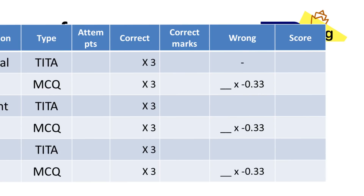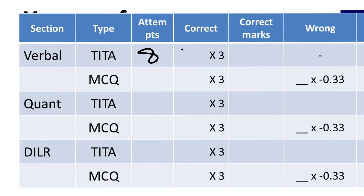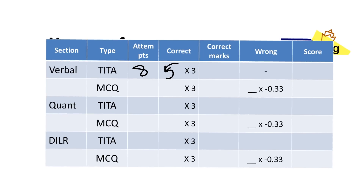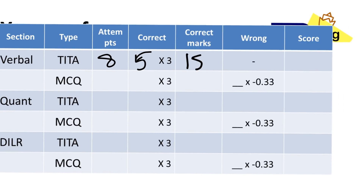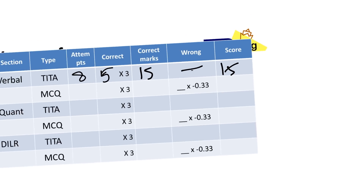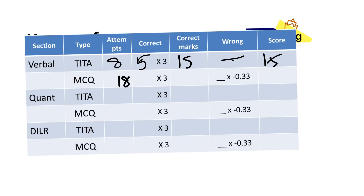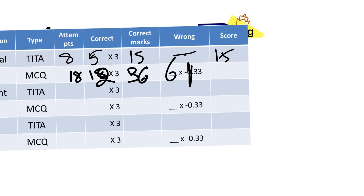Now we'll do the most important part. Please pause the video and draw this table. Let's look at the verbal section first. For TITA questions — let's say I attempted 8, did 5 right: 5 marks × 3 = 15 marks, no negative marking, so overall score is 15. For non-TITA MCQ questions there is one-third negative marking. Say I did 18 questions, 12 correct: 12 × 3 = 36, minus 6 for wrong answers = 30 marks. Total verbal score: 45.